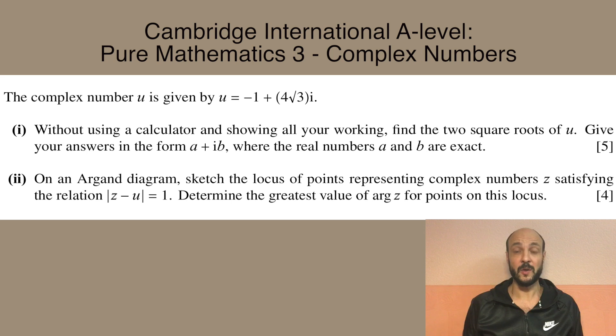The complex number u is given by u equals minus one plus four root three times i. Part 1. Without using a calculator and showing all your working, find the two square roots of u. Give your answers in the form a plus ib, where real numbers a and b are exact.